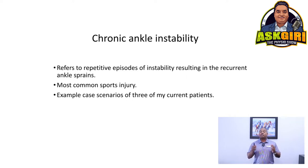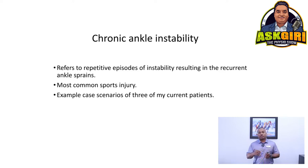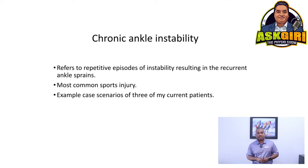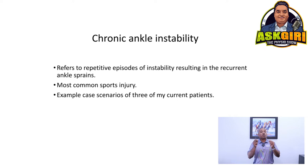Chronic ankle instability means: you had an ankle sprain — say a grade 2 strain, tearing some fibers — you iced it, elevated it, wrapped it, swelling went down, pain went down, and you went back to sport without proper retraining or physiotherapy. Then you sprain it again in two months, still have pain and dysfunction more than six months after the first sprain. That's when you're moving into chronic ankle instability, one of the most common sports injuries.